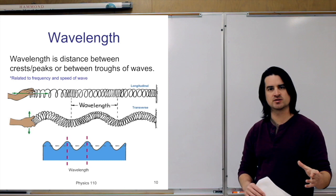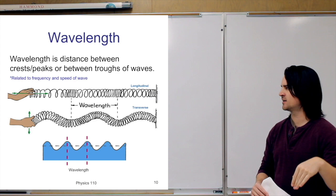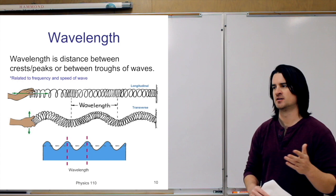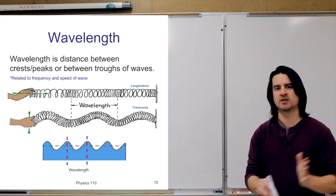To recap: basic properties of vibrations are period and frequency — two ways of talking about how quickly an oscillation occurs — and amplitude, which describes how far an object or medium is displaced from equilibrium. For longitudinal waves, amplitude describes how large the compression is.